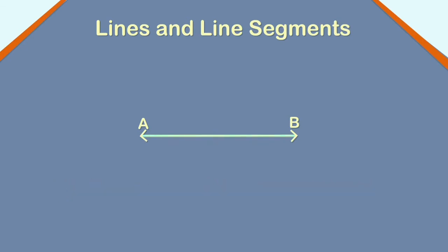The given line can be read as line AB or as line BA. It can be written as AB or BA with a double-headed line over it.